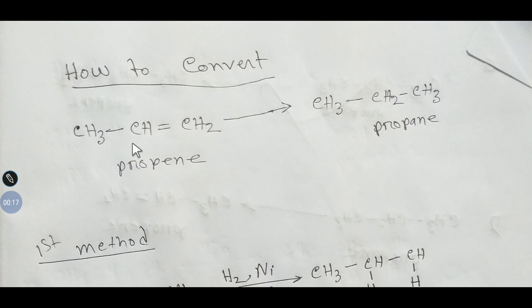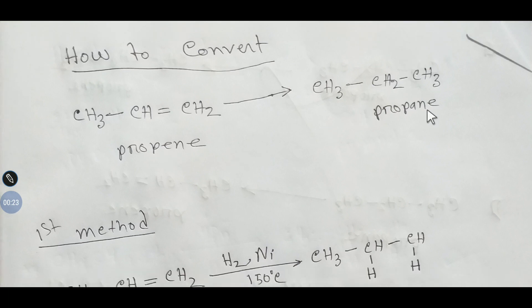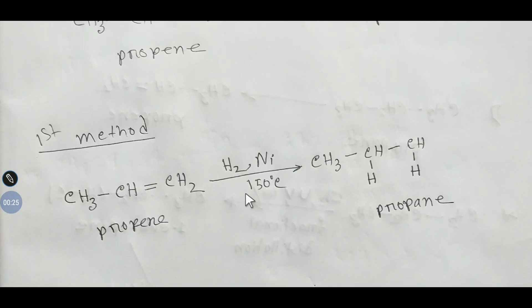At first we will learn how to convert propane to propane. So there are two methods. At first we will look at the first method. If you add hydrogen in presence of nickel catalyst and if you provide 150 degree Celsius temperature, then propane will convert to propane.